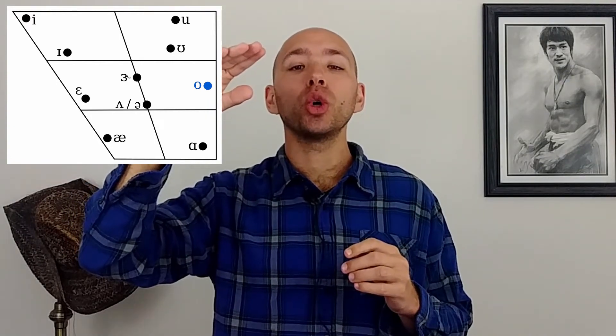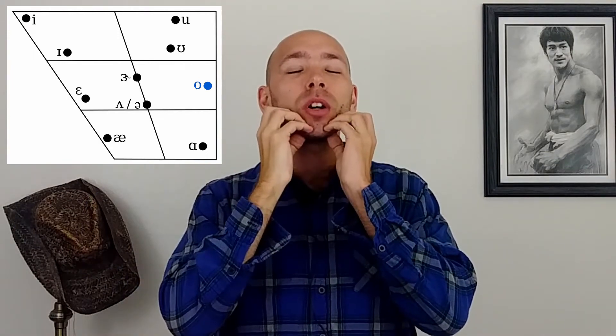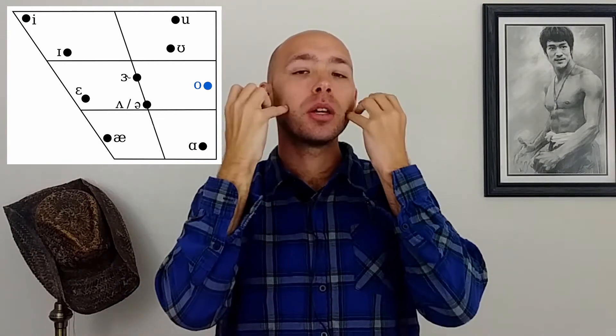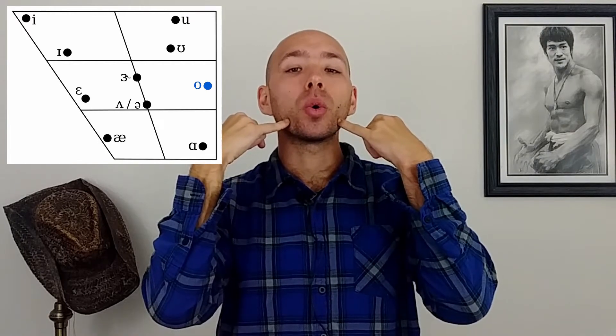Instead of OO, where the jaw doesn't really move, with the O sound we are going to move the mouth a little bit, but it needs to be more open to start. Now a common mistake is opening your mouth too much and then trying to close it — we don't want to do that. If you don't open enough, that's also going to sound weird. So play with it to find the exact position.